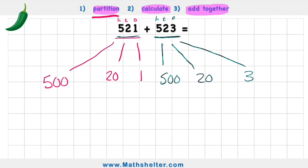So now, when I'm doing a mental calculation, I can picture this in my mind. 521 is broken into 500, 20, and 1. And 523 is broken into 500, 20, and 3. And now, even in my mind, I can think to myself, well, let's add these together.